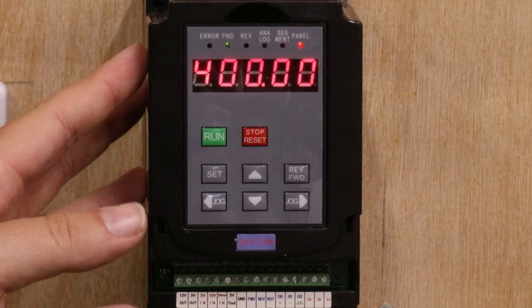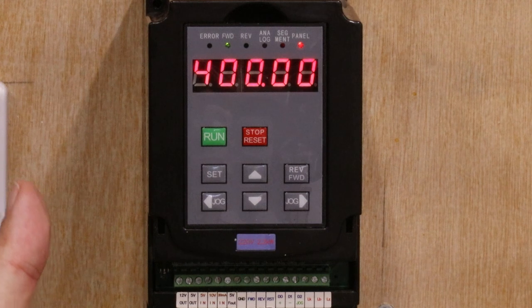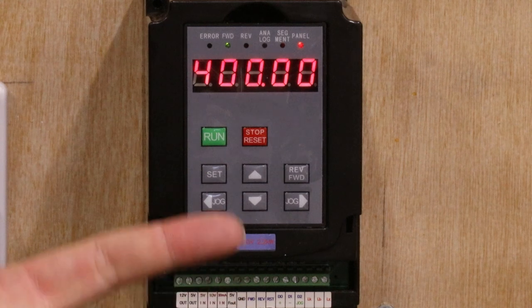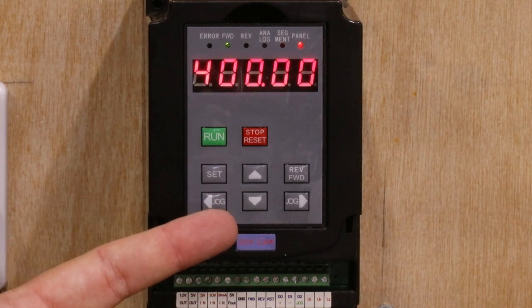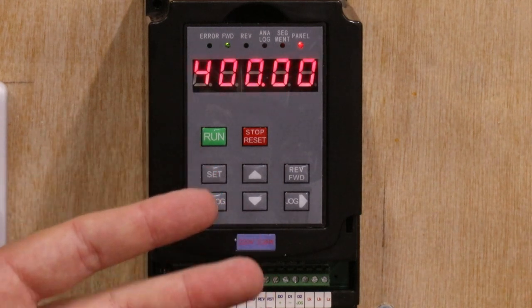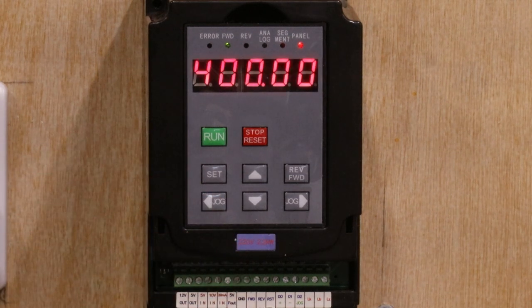Now we need to tell the VFD a couple of things. The first thing is that we want to use an external signal to turn the spindle on. The second thing we need to tell it is what that external signal is. We also need to tell it that we expect the spindle to run forward, and we also need to tell it to effectively turn that spindle on once it's detected the signal is good.